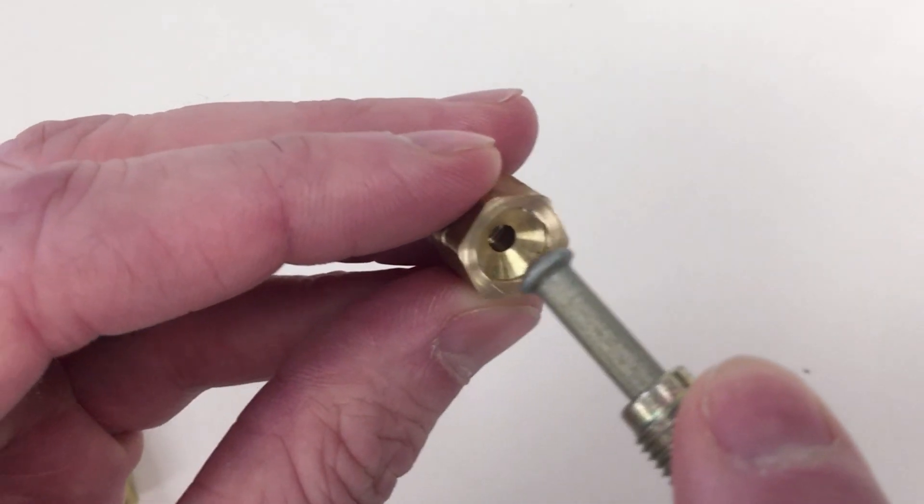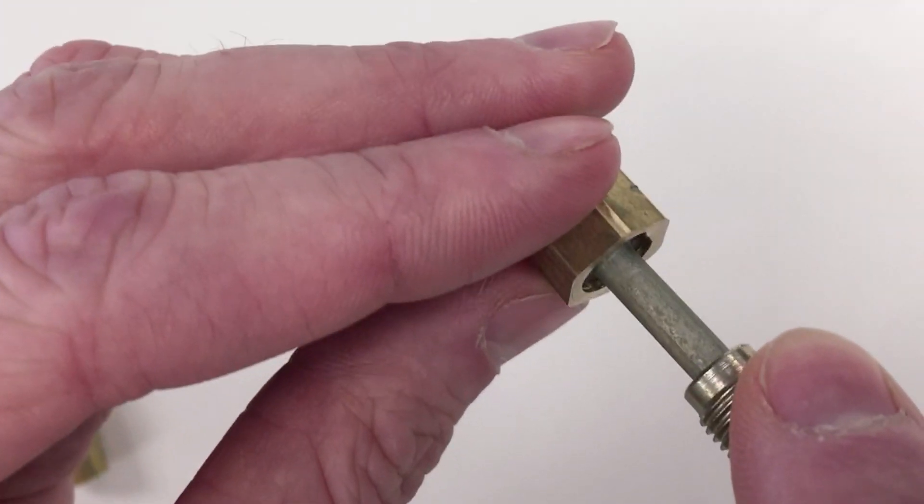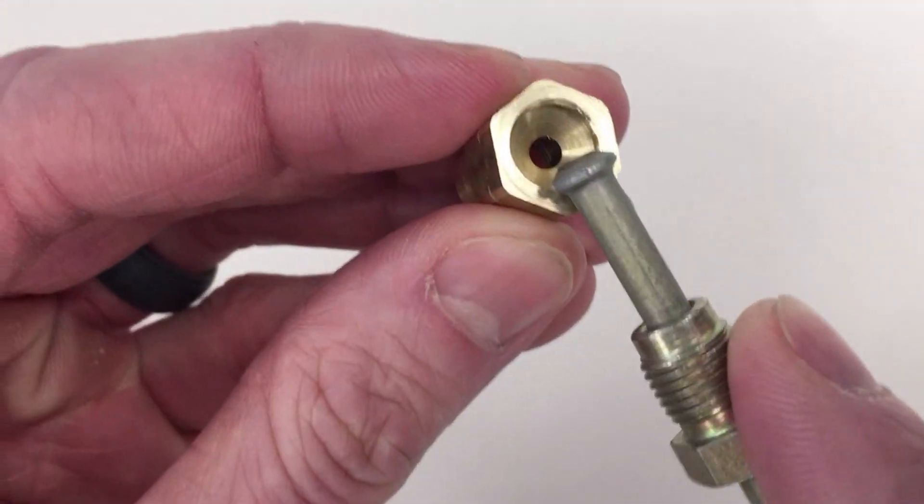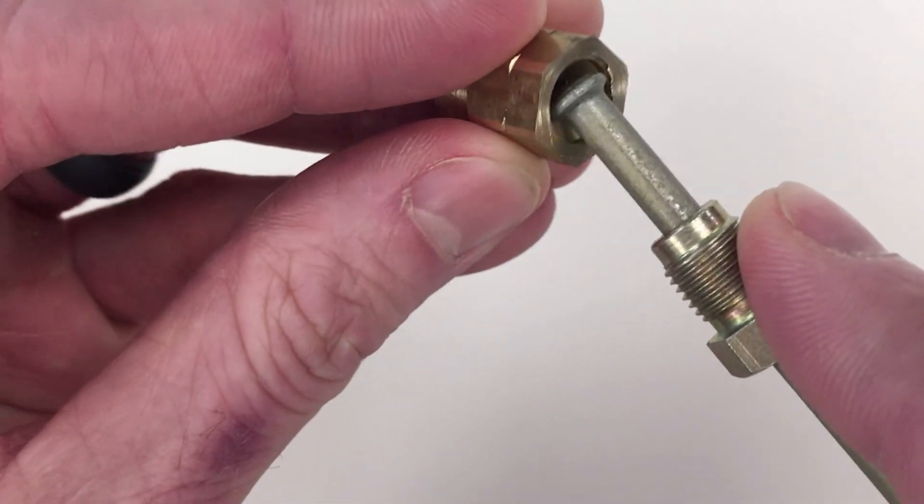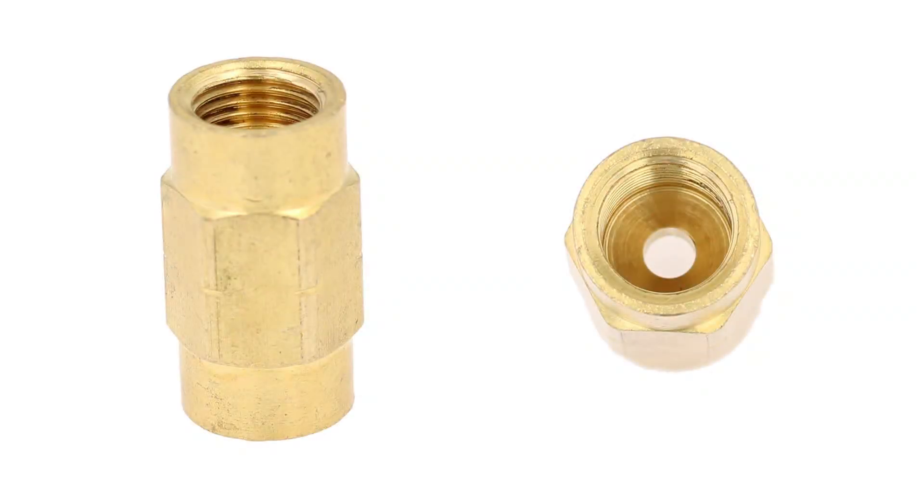A female bubble flare fitting has a concave seating area where the bubble flare brake line nests. We have removed part of this fitting so you can easily see inside. The fitting usually looks like this.